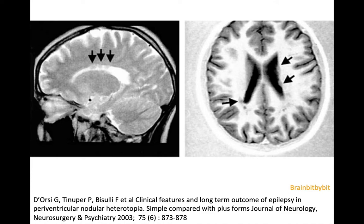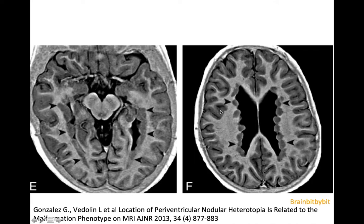The heterotopic gray matter has the same signal intensity as cortex on all MRI sequences. So on T2, inversion recovery, and T1-weighted images, it should have exactly the same signal intensity as the normal cortex. In this case, the heterotopic gray matter is located in the periventricular area bilaterally. If the heterotopia is unilateral, it's more often associated with cortical abnormalities of the normotopic cortex.